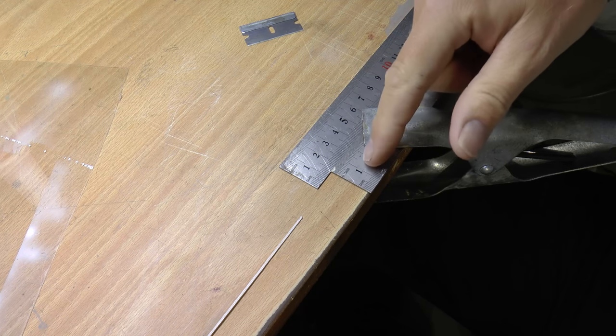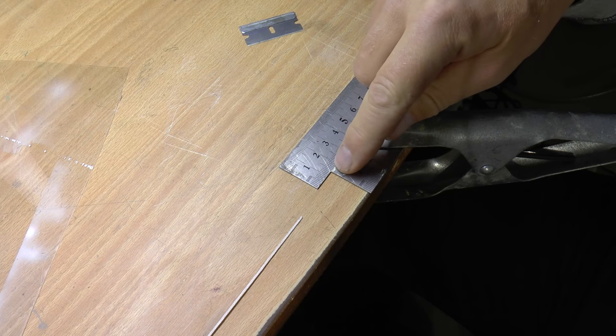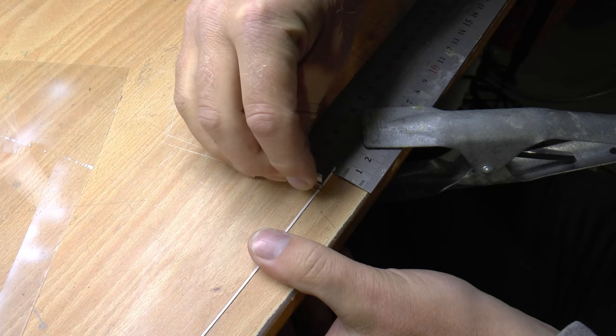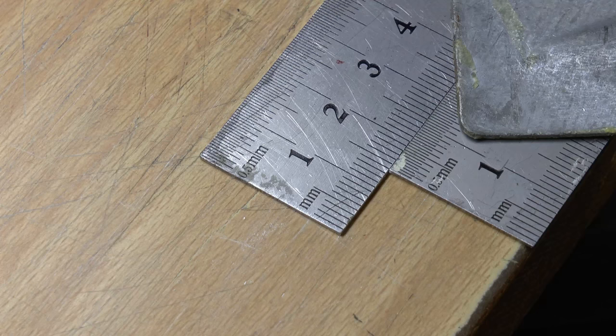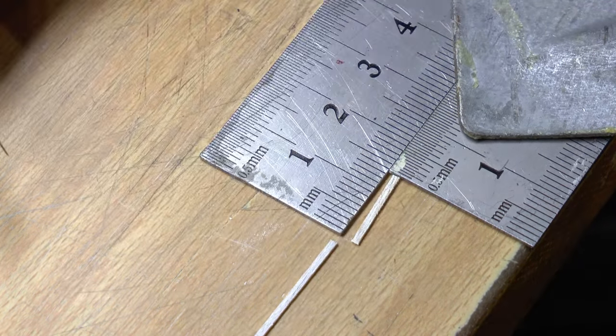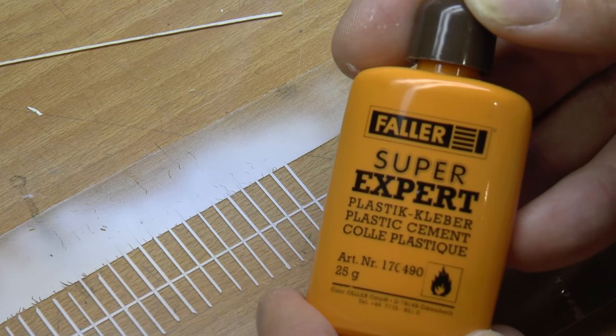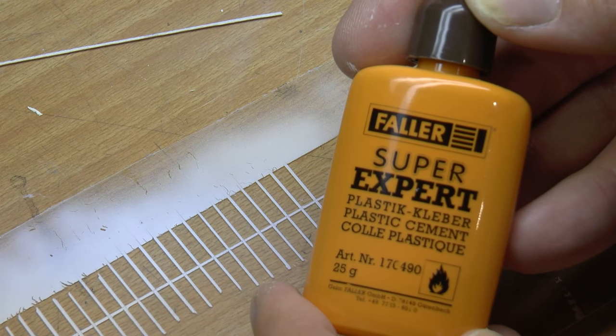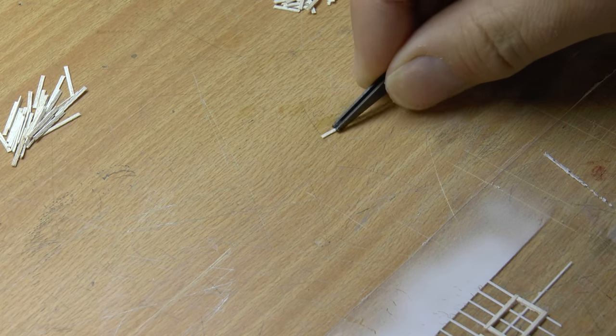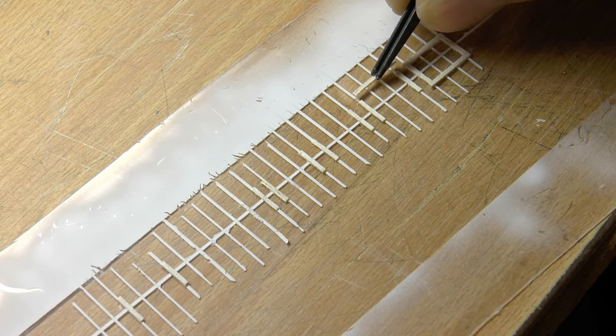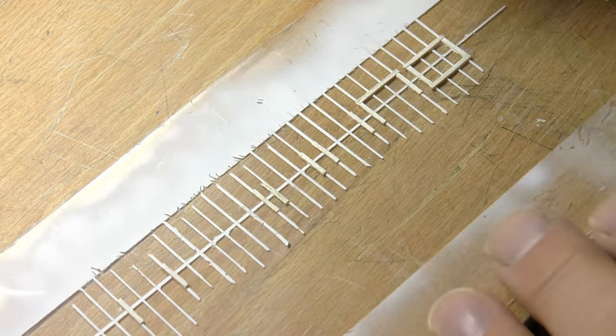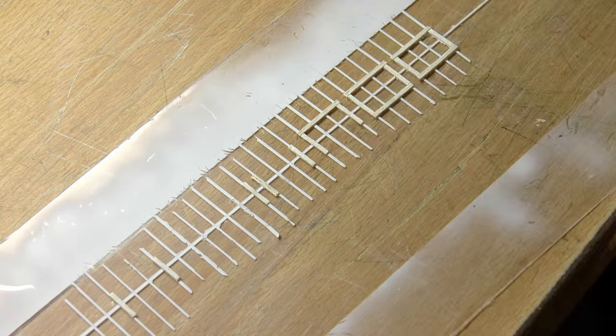So I start by fixing two steel scales to the table like this so I get a proper and fixed setup to get a consistent length of all of the cut pieces. This piece should be 14 millimeters and the short one should be 8. I fixed them with Faller Super Expert glue which is really intended for plastic kits. And I just fixed them onto the clear plastic in the right position like this.